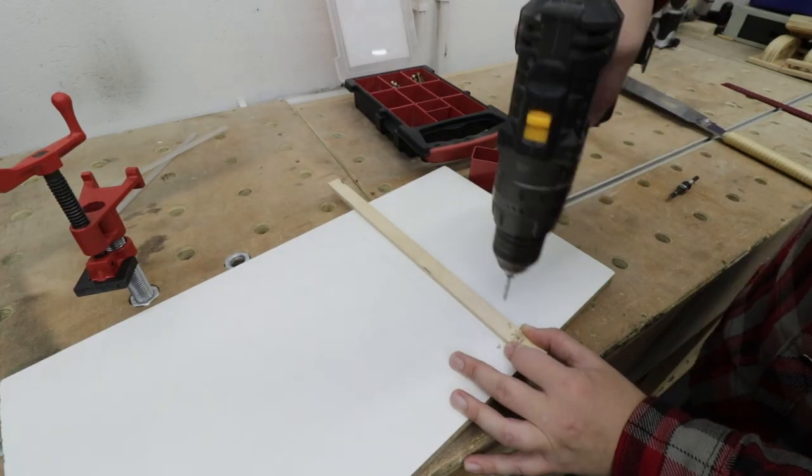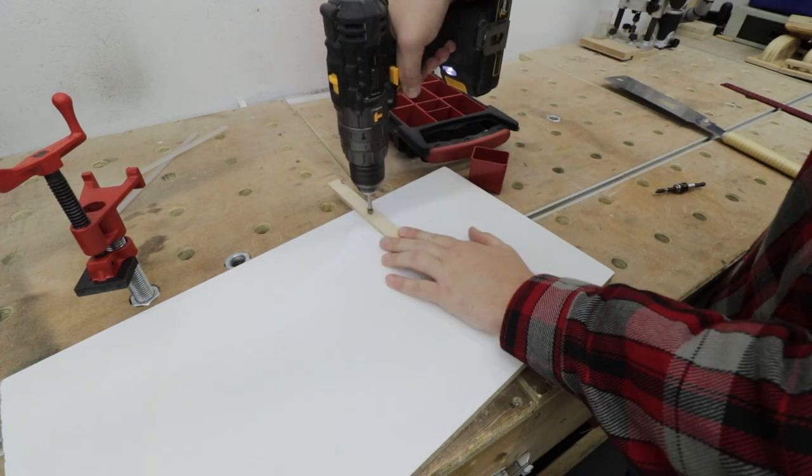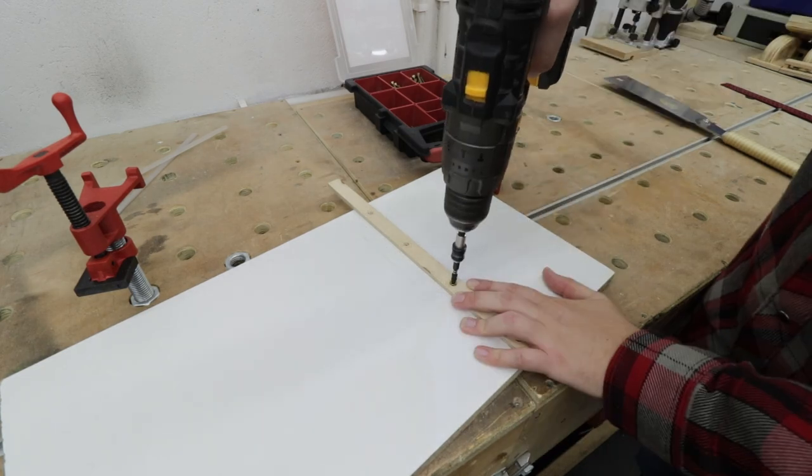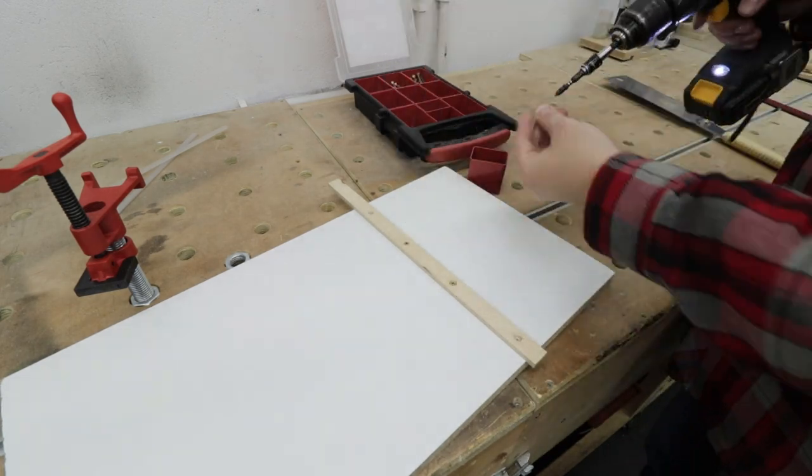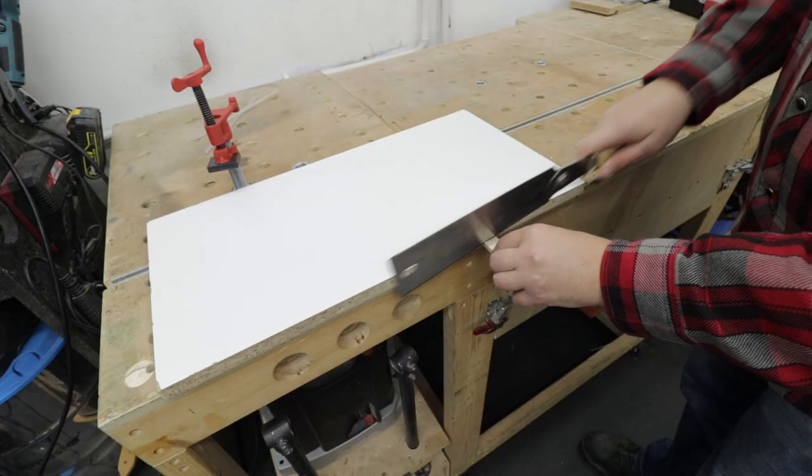After the glue has set, I'm just going to pre-drill a few holes to add some screws to the runner itself to make sure it will stay in the designated space. Now with my hand saw I'm just cutting off the excess of the runner.